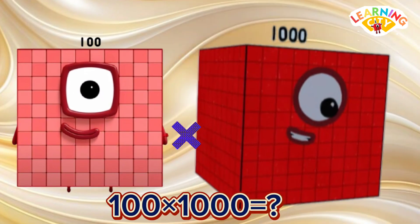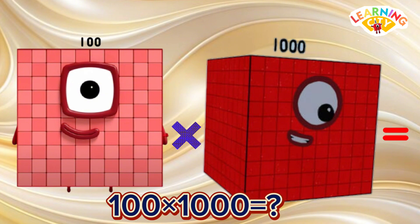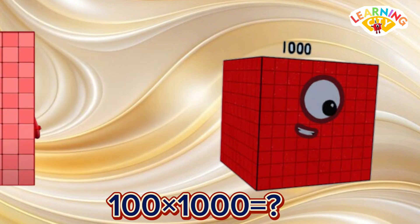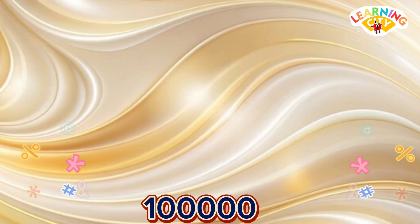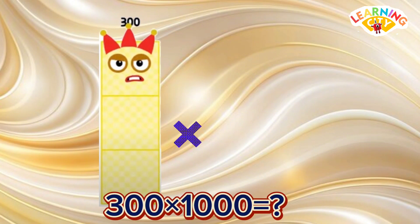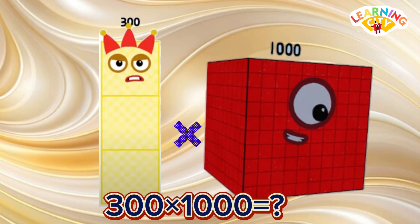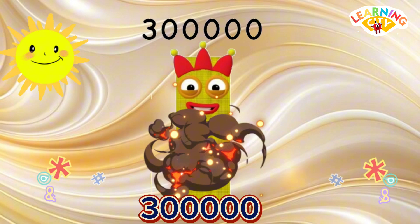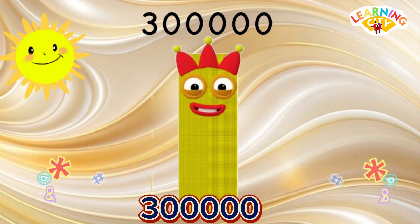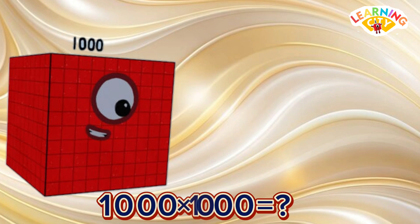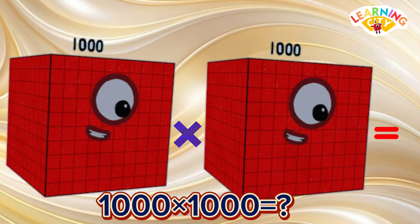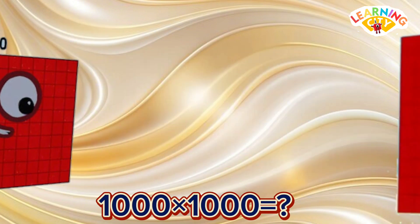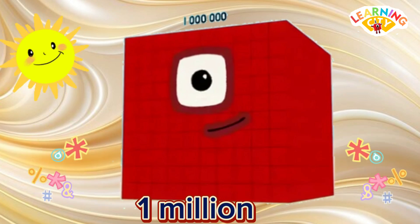100 multiply 1,000 is equals to 1,000,000.